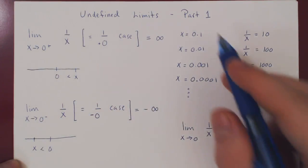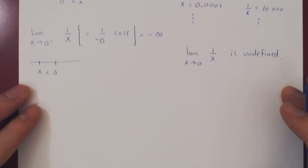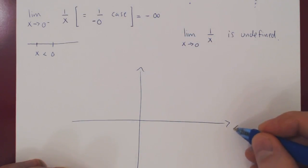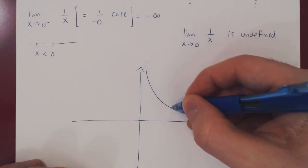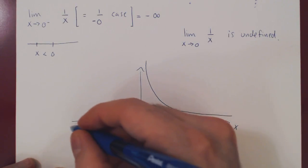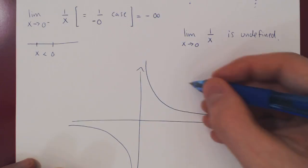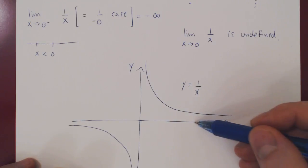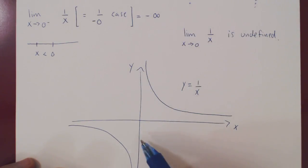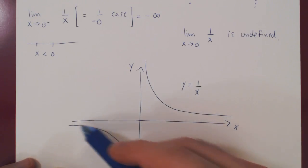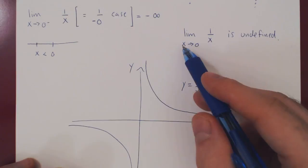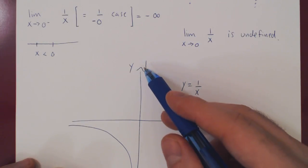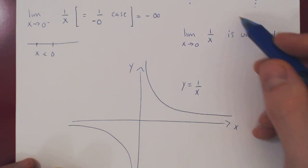You can visualize this by graphing 1 over x. Here's a graph of 1 over x for positive real values of x, and here's a graph for negative real values of x. As we approach 0 from the right, y blows up to positive infinity. As we approach 0 from the left, y approaches negative infinity. So if we allow x to approach 0 from either side, we can't choose between positive and negative infinity, and the limit is undefined.